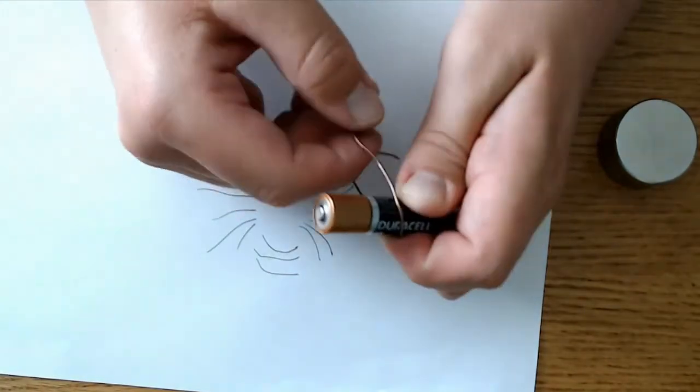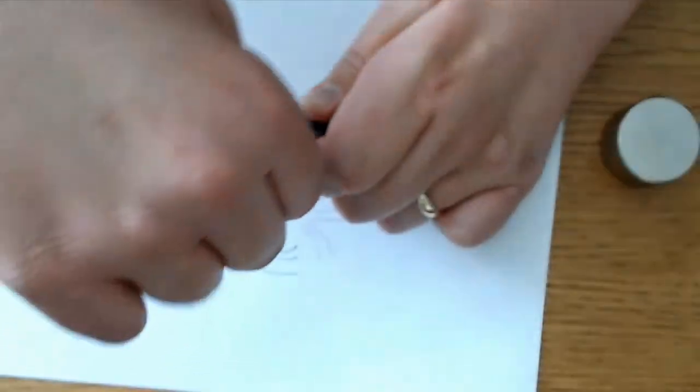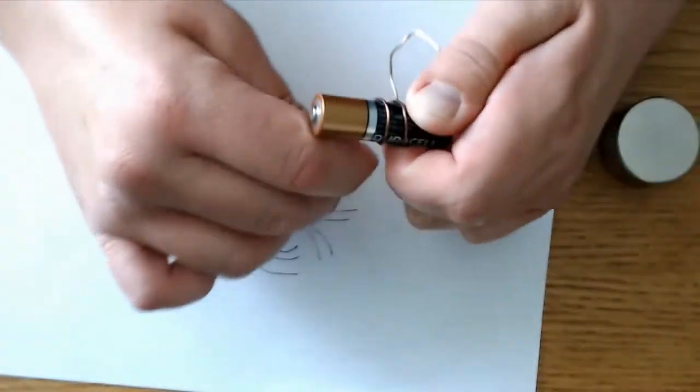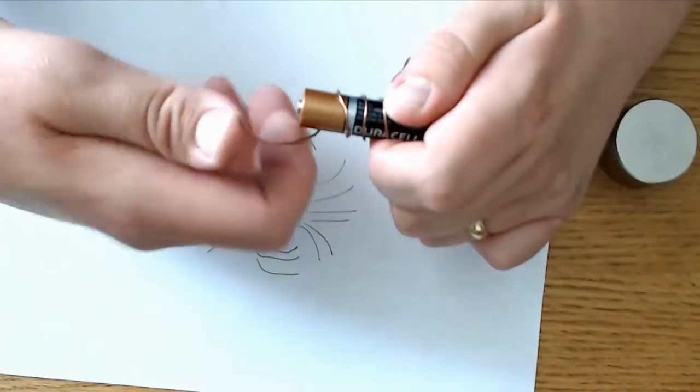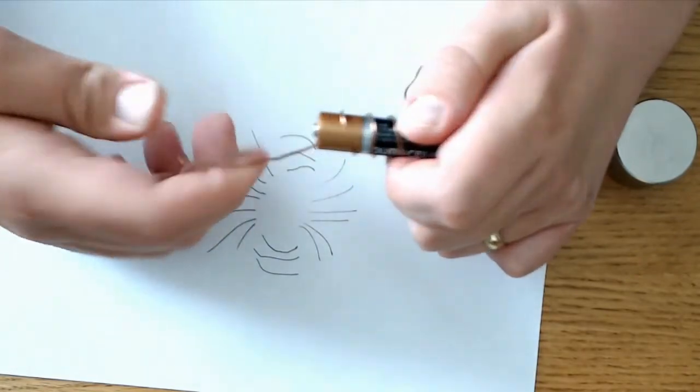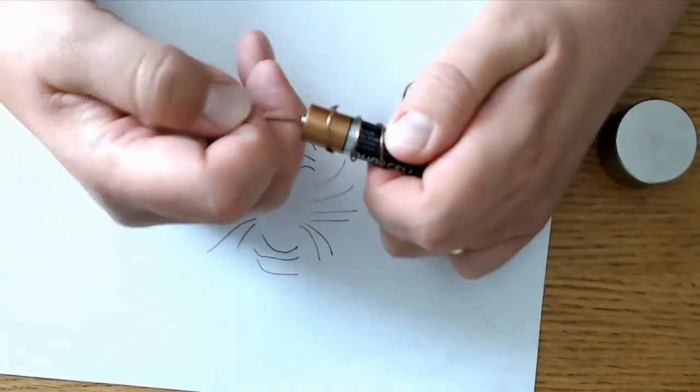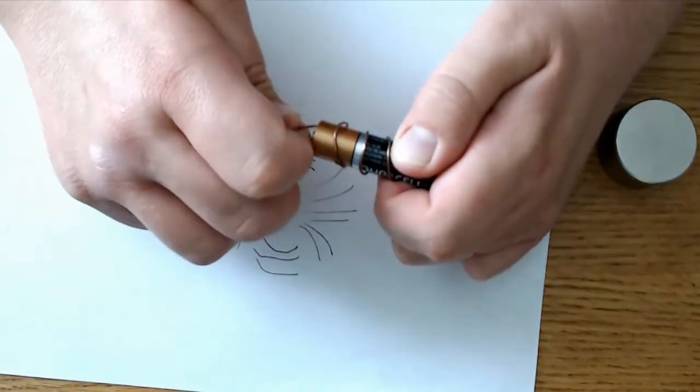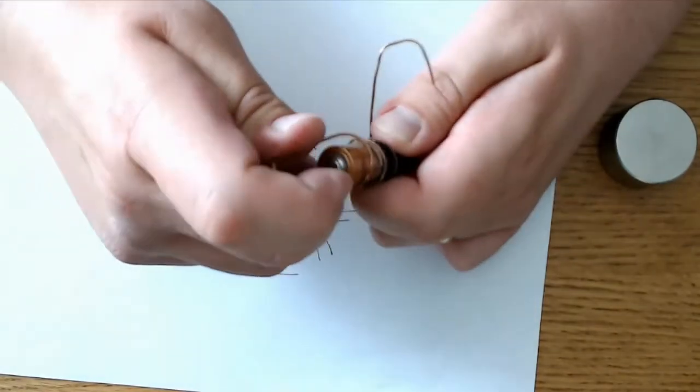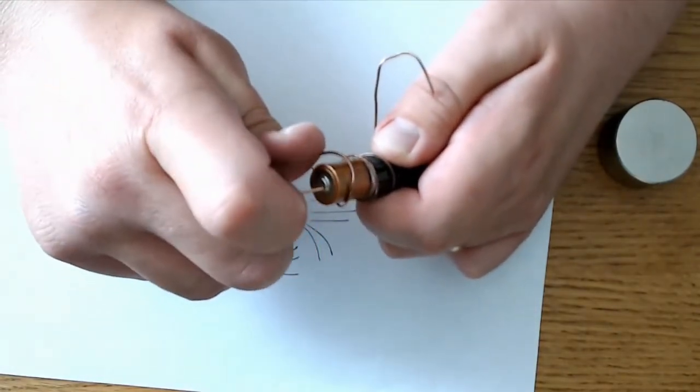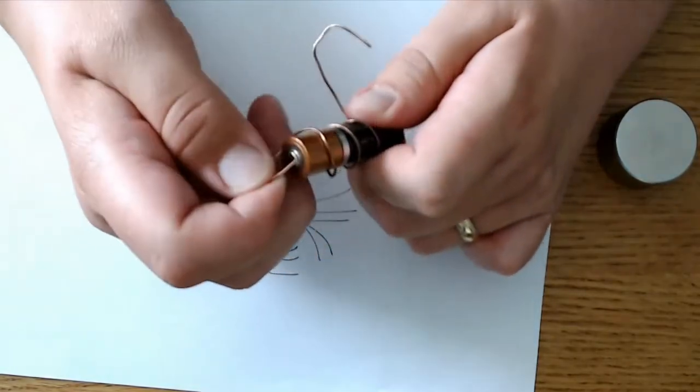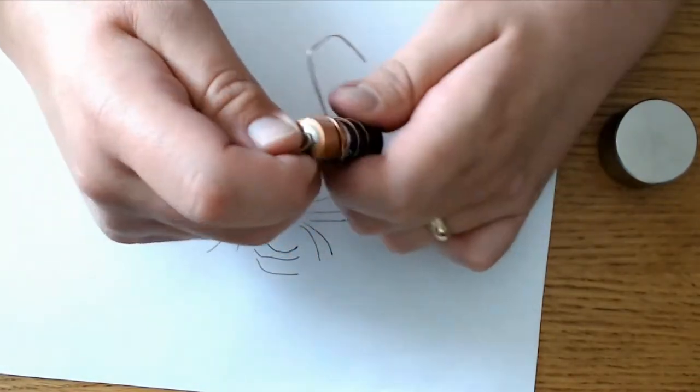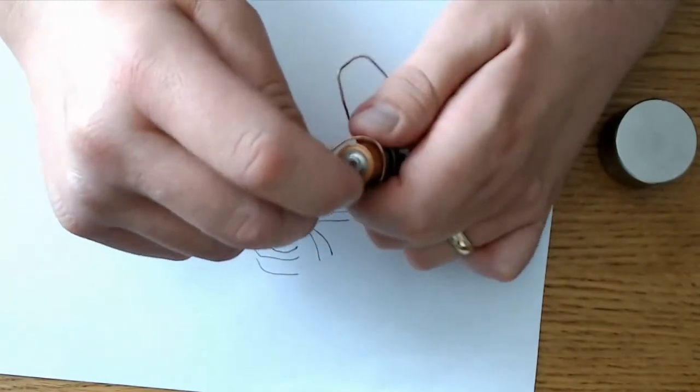And you want to wind it tight, or at least somewhat tight, around your battery. And I do like to leave a little extra room at the top. And you may have to play with this a little bit too, to get it just right. Because it's probably not going to be perfect your first time.